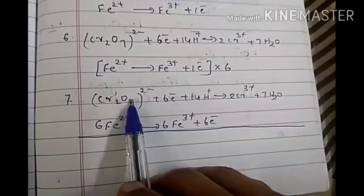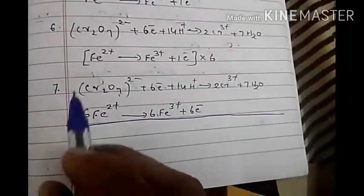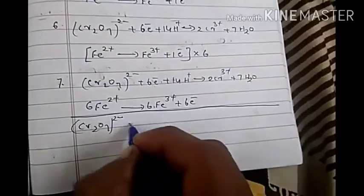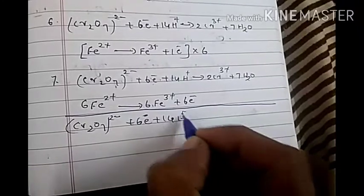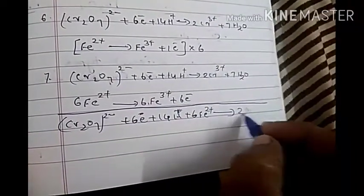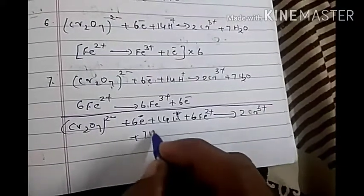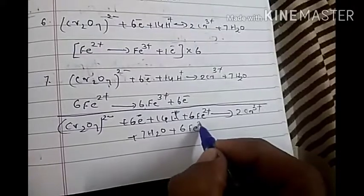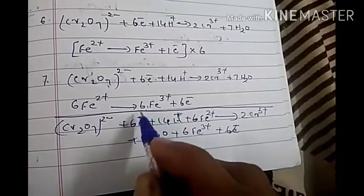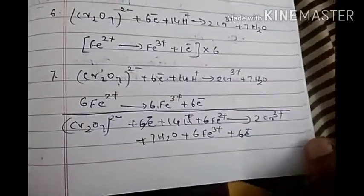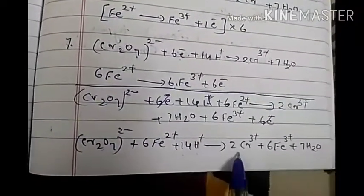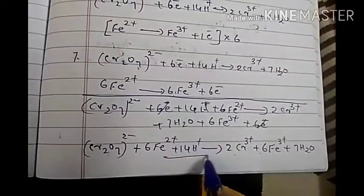In the next step, we add both half-reactions together — reactants together and products together. This gives: Cr₂O₇²⁻ + 6e⁻ + 14H⁺ + 6Fe²⁺ → 2Cr³⁺ + 7H₂O + 6Fe³⁺ + 6e⁻. The 6 electrons appear on both sides so they cancel out. The final balanced equation is: Cr₂O₇²⁻ + 6Fe²⁺ + 14H⁺ → 2Cr³⁺ + 6Fe³⁺ + 7H₂O.